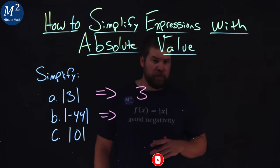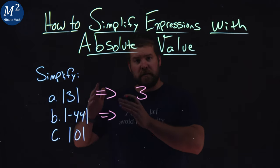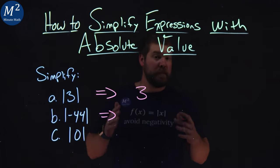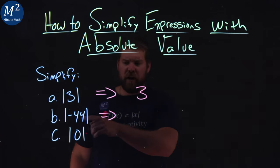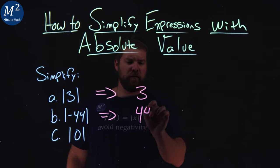Let's go with negative 44. What's the distance negative 44 is from zero, and that's 44. So absolute value of negative 44 is a positive 44.